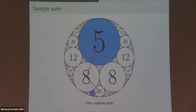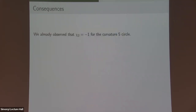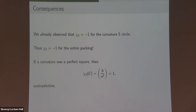There's a natural graph to make: vertices are circles, and you draw edges between circles of co-prime curvature. You can ask if this graph is connected — and it's a fun exercise to show that it is. In particular, χ₂ is actually a constant function across the entire circle packing. Quadratic reciprocity allows it to propagate along certain tangencies to the entire packing. For a sample path: if you want to go from curvature 5 to 44, you go 5 → 8 → 44, but 8 and 44 are not co-prime, so you just make a pit stop at 21. That's how you prove connectivity.